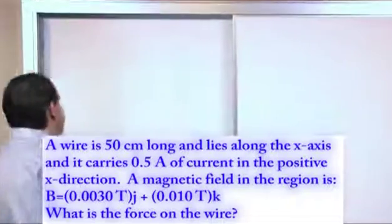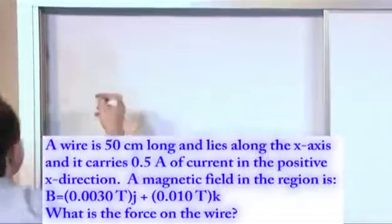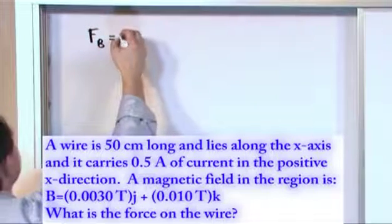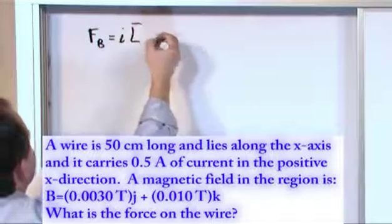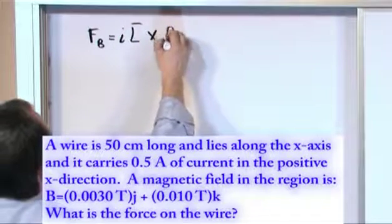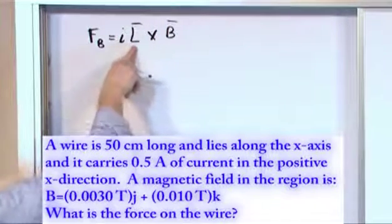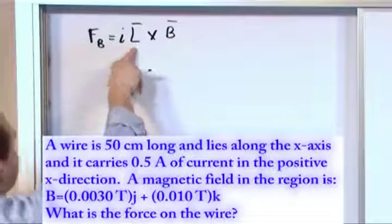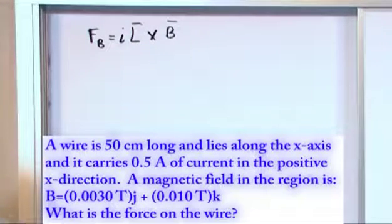So from that information, we should be able to just dive right into the solution because the magnetic force on a wire is I times the length of the wire crossed with B. Now this just isn't the length. This is the length of the wire and also it takes into account the direction of the wire. We cross it with the magnetic field strength there.